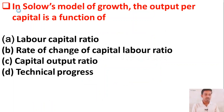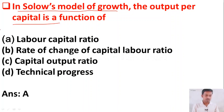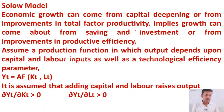The first question: in Solow's model of growth, the output per capital is a function of — option A: labor-capital ratio, option B: rate of exchange, option C: capital-output ratio, option D: technical progress. The right answer is option A, labor-capital ratio. In Solow's model, the output per capital is a function of the labor to capital ratio.